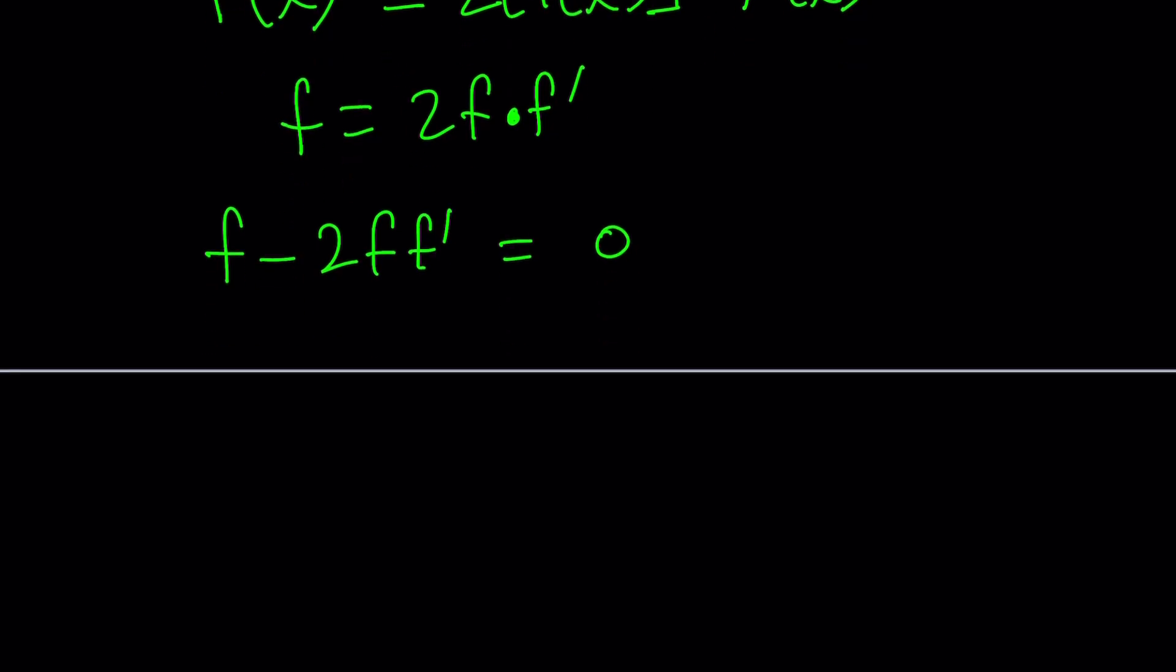Now you can factor out f. f represents f(x), by the way. 1 minus 2f prime equals zero. Awesome.